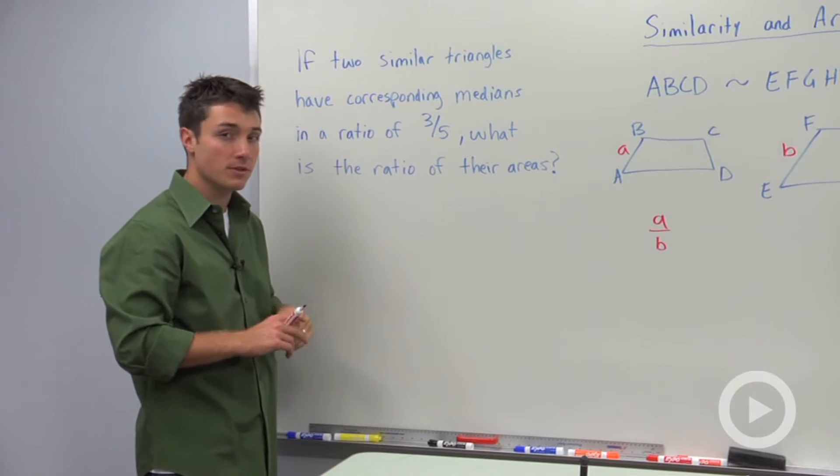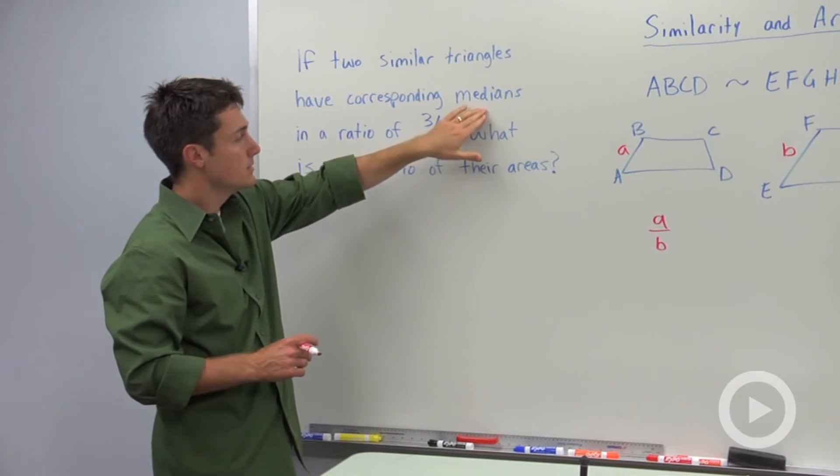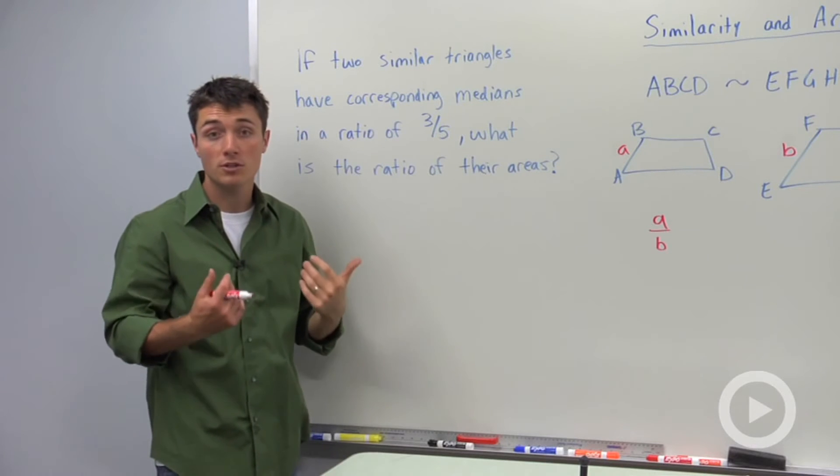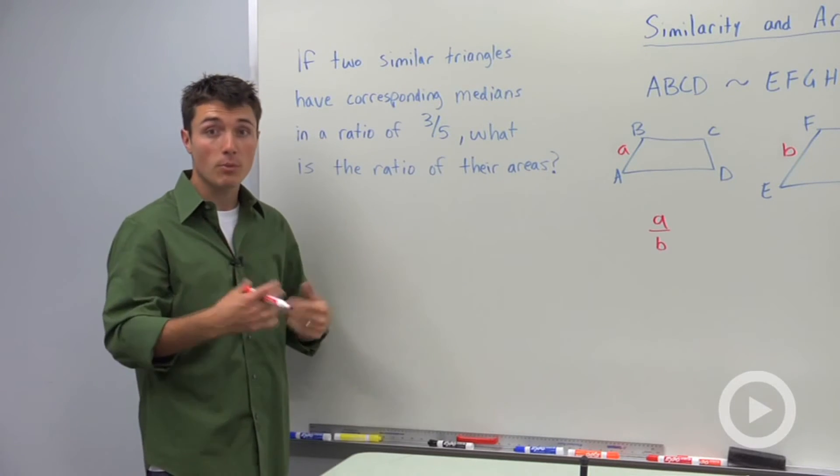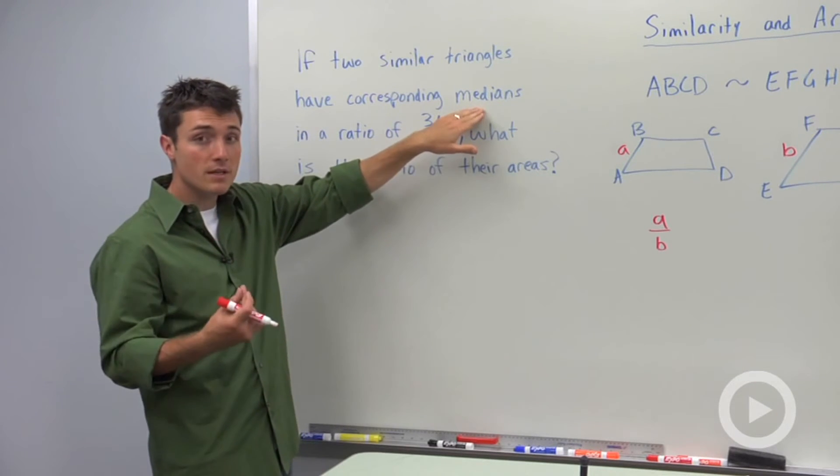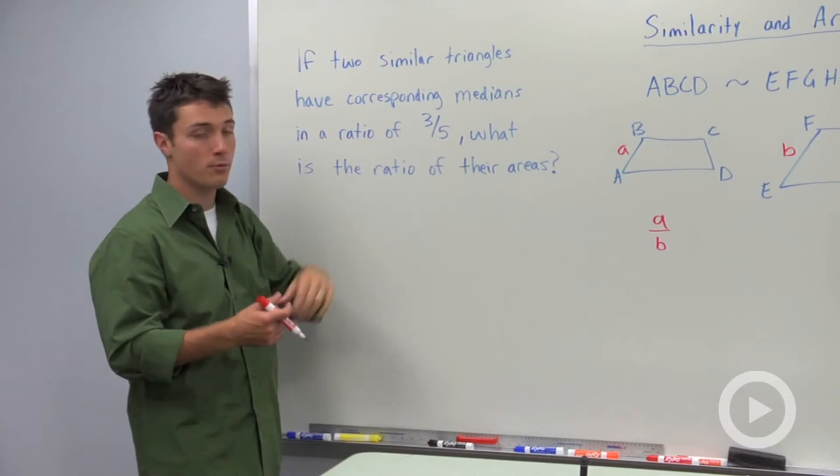The first thing that will trip up students about this statement is medians. Well you have to remember that if you have corresponding medians in similar triangles, that they're going to be proportional. So just because we're talking about medians doesn't change this ratio of three to five.